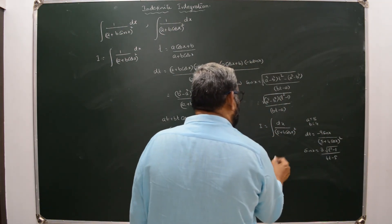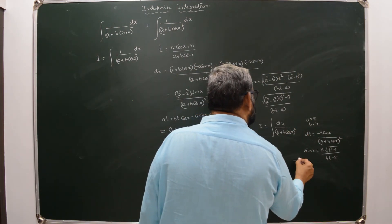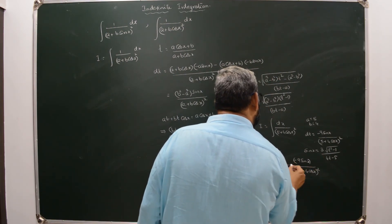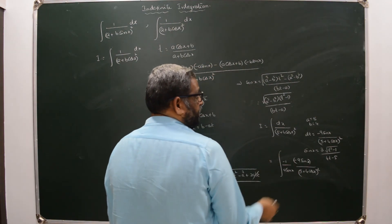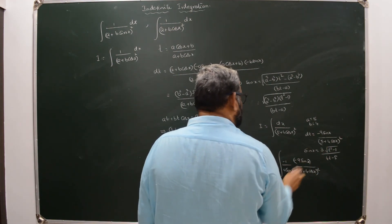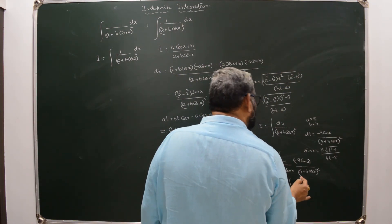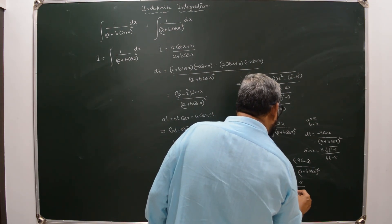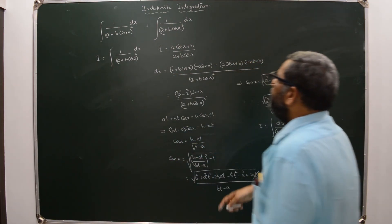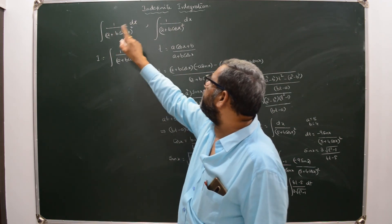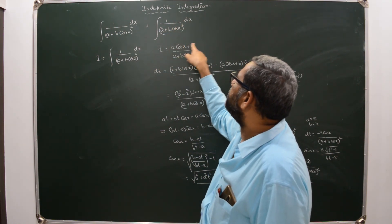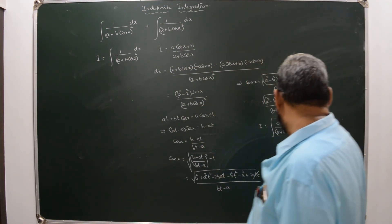After substituting, the integral becomes ∫(-9·sinX/(5 + 4cosX)²) · (-1/(9·sinX)) giving the dt term. This simplifies to -1/9 · ∫(4t - 5)/(3√(t² - 1)) dt. The method is almost identical to the sinX case. Remember: for 1/(a + b·sinX)², take t = (a·sinX + b)/(a + b·sinX); for 1/(a + b·cosX)², take t = (a·cosX + b)/(a + b·cosX).